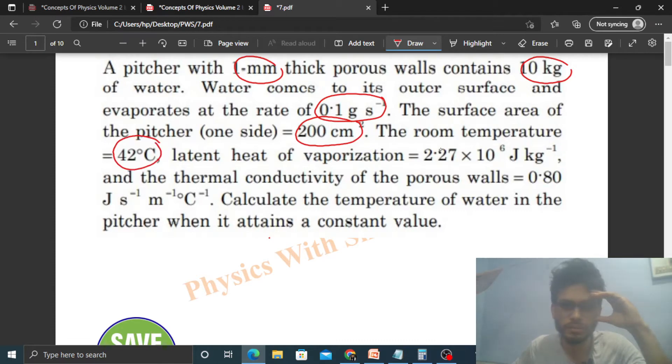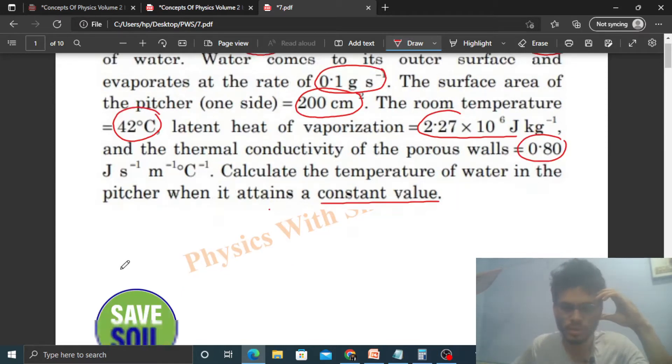The room temperature is 42 degree Celsius, latent heat of vaporization is given, and the thermal conductivity of the porous walls is 0.8. Calculate the temperature of water in the pitcher when it attains a constant value.